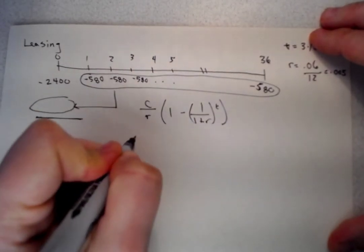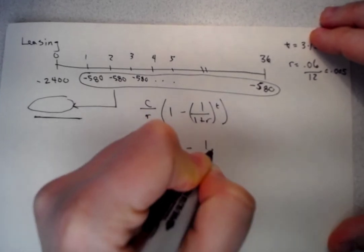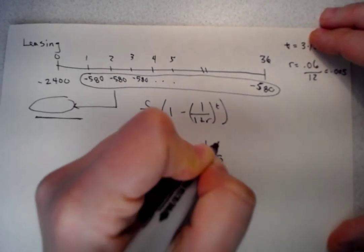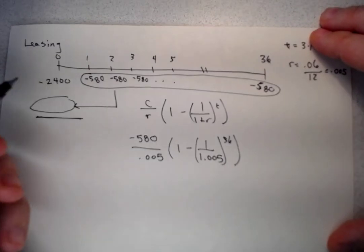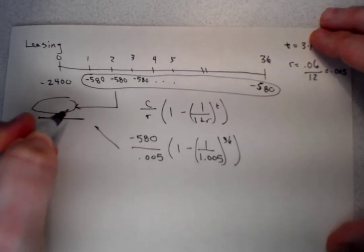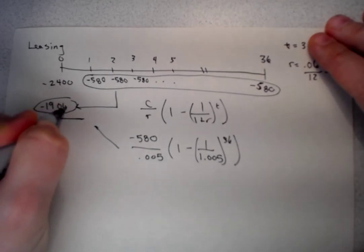Once we do minus 580 divided by 0.005 times 1 minus 1 divided by 1.005 to the power of 36, this is going to equal minus 19,065.